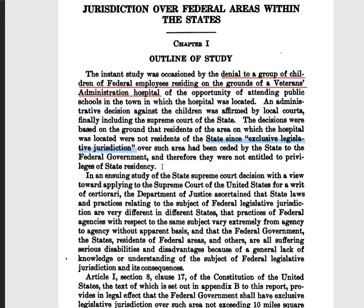The areas inside the states purchased by the federal government were supposed to be for military purposes — and that was the only reason why the federal government was allowed to purchase lands inside the states — just for defense, in order to do the things in the preamble: promote liberty, general welfare, tranquility, and all those things.